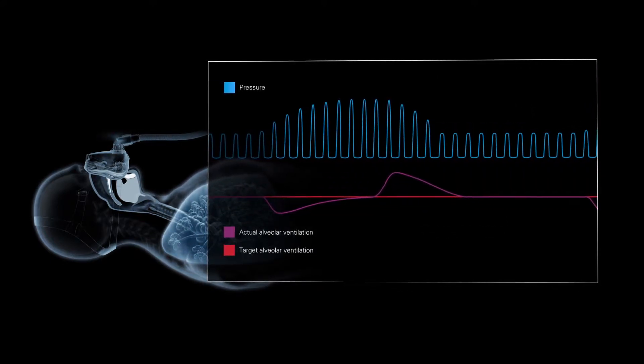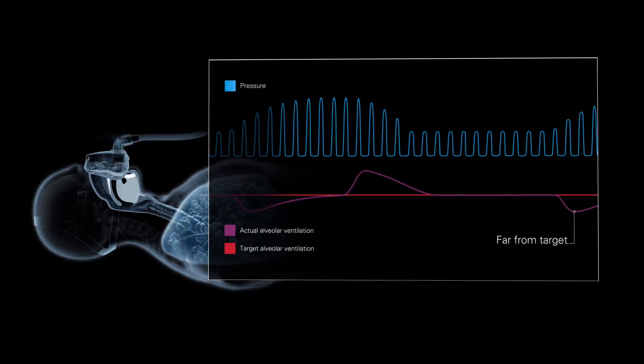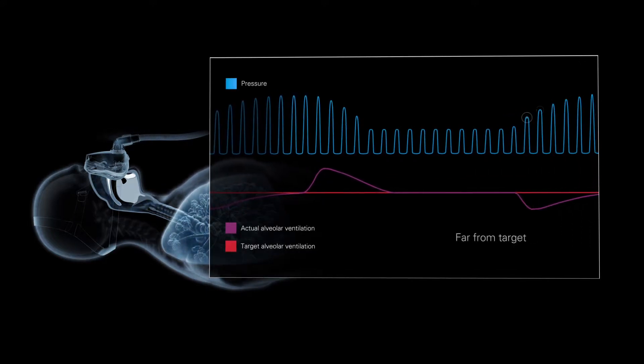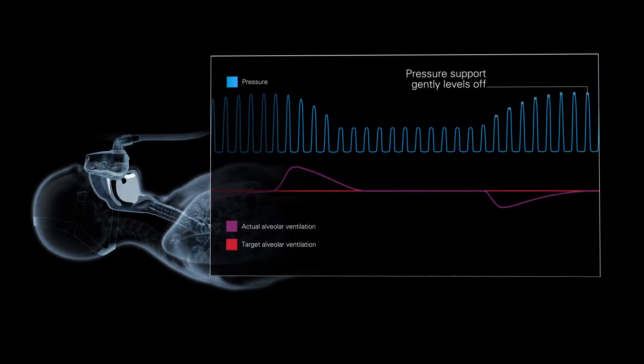If alveolar ventilation is far from target, pressure support adjusts quickly. As alveolar ventilation gets close to target, pressure support gently levels off.